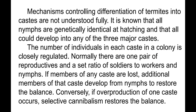Mechanisms controlling differentiation of termites into castes are not fully understood. It is known that all nymphs are genetically identical at hatching and that all could develop into any of the three major castes. The number of individuals in each caste in a colony is closely regulated. Normally there is one pair of reproductives and a set ratio of soldiers to workers and nymphs. If members of any caste are lost, additional members of that caste develop from nymphs to restore the balance.